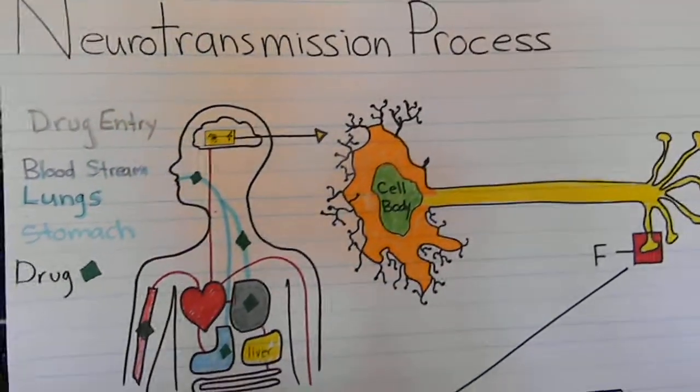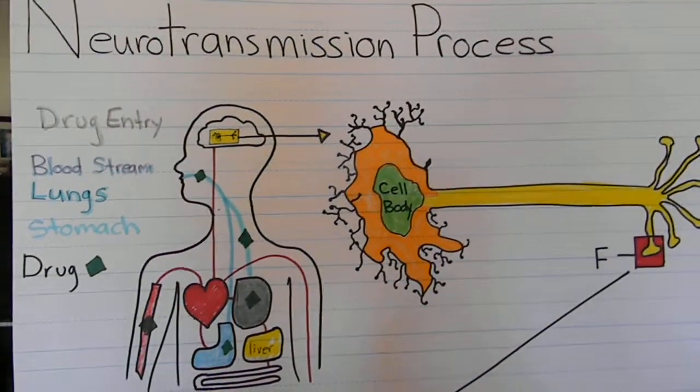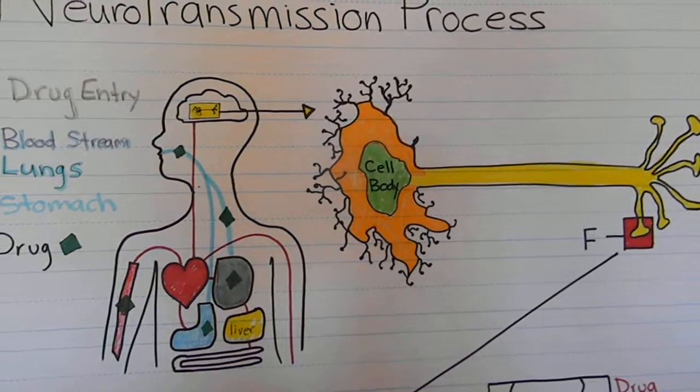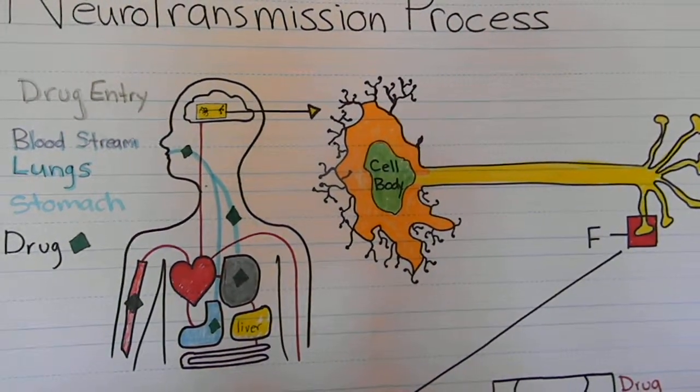Here is a little video on the neurotransmission process. You can see that drugs typically enter the body in one of three ways: through the mouth, either swallowed or inhaled, or injected directly into the circulatory system.